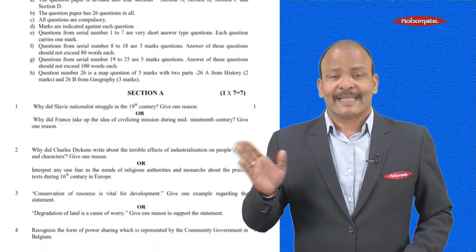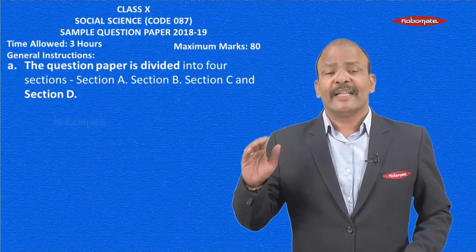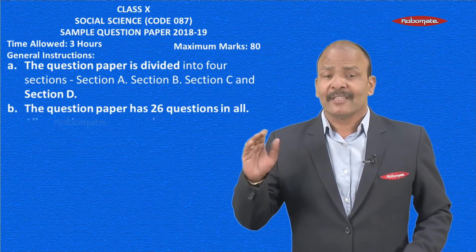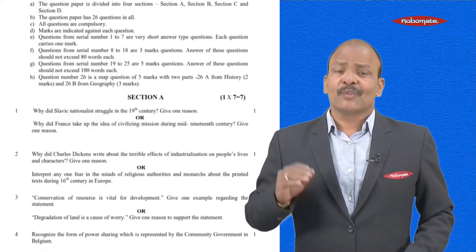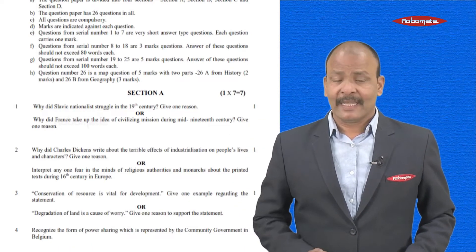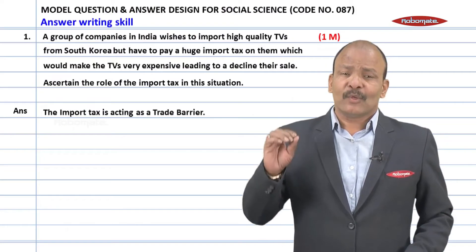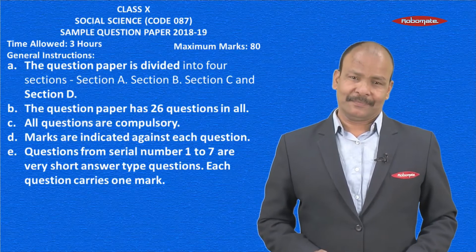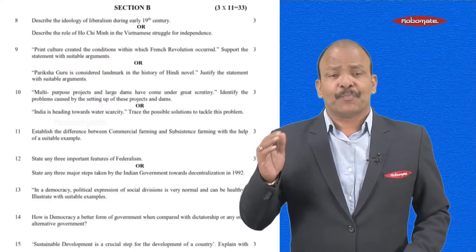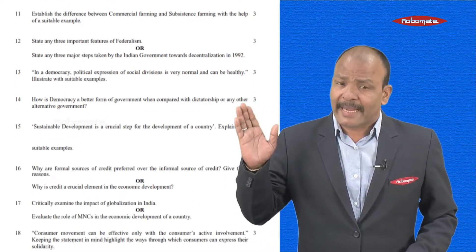Talking about some general instructions - if we take up the question paper, you have four sections: A, B, C, and D. Altogether you have 26 questions and all 26 questions are compulsory. Section A has seven questions, starting from 1 to 7, and these are short answers - you need to answer in one sentence because each one carries one mark. Section B has questions from 8 up to 18 and these questions carry three marks.